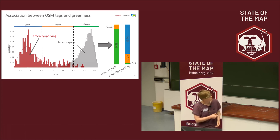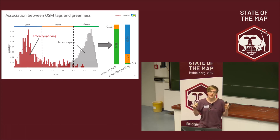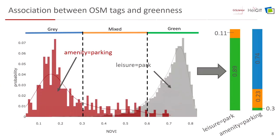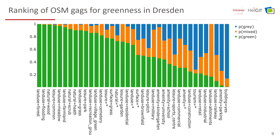I derive those three values for all tags and rank them by probability of greenness. 'Leisure=park', for example, has a 98% probability of being vegetated and 11% uncertainty. 'Landuse=forest' is basically the best indicator and always shows up. 'Landuse=grass' and 'leisure=park' are what we also expect. 'Landuse=allotments' — private garden plots common in Germany — appears with a very high uncertainty, which we'll see later why.